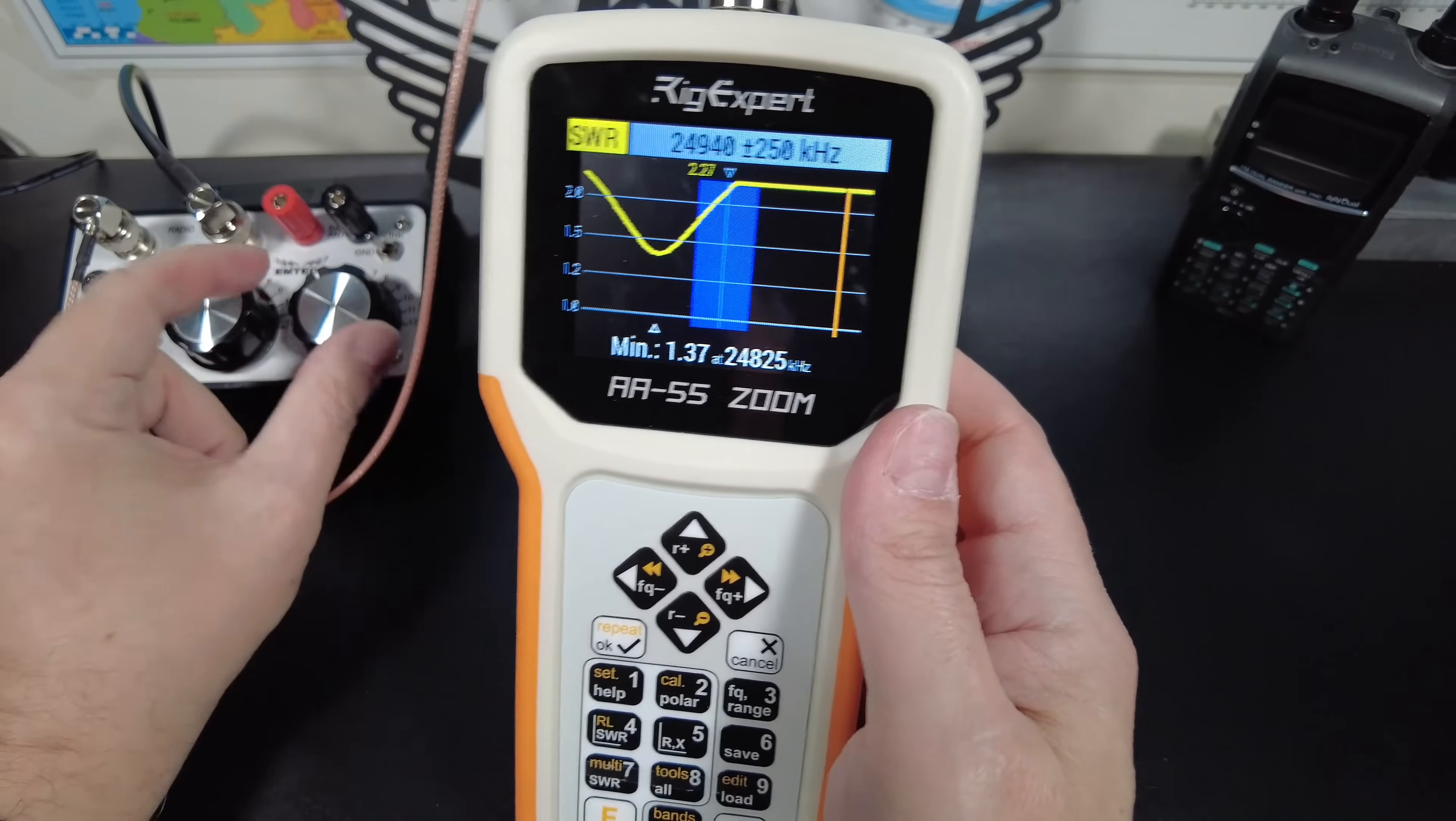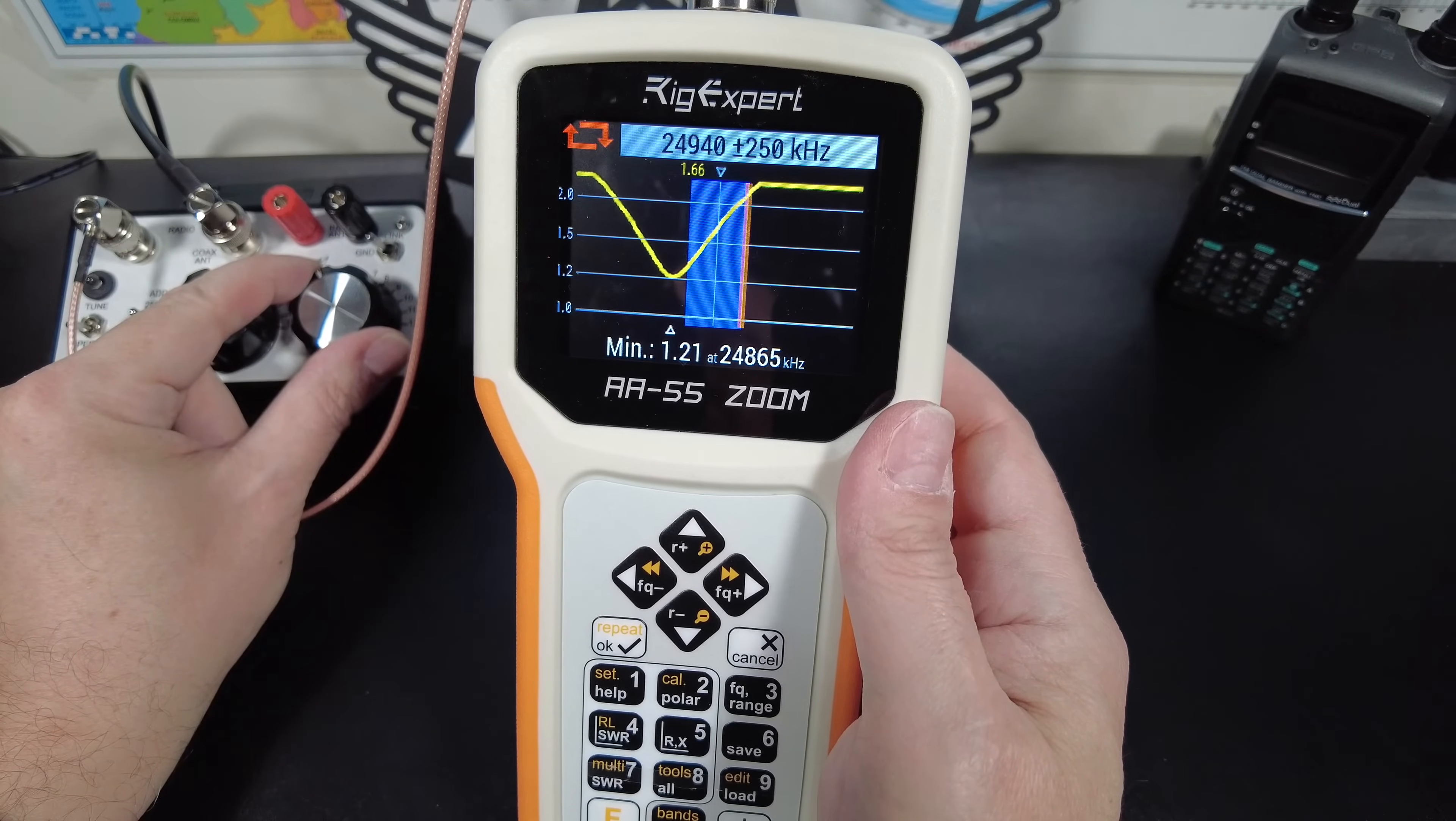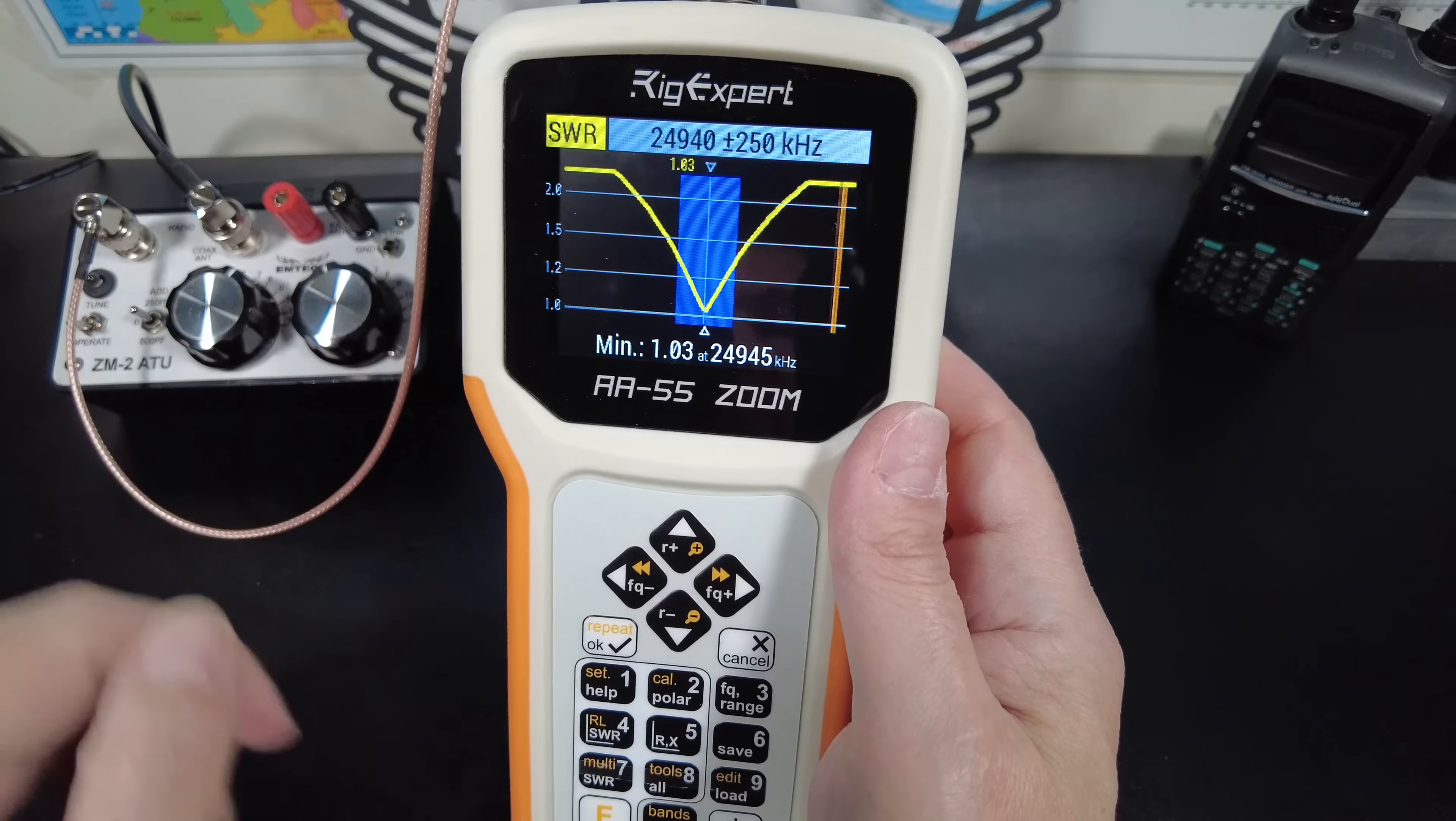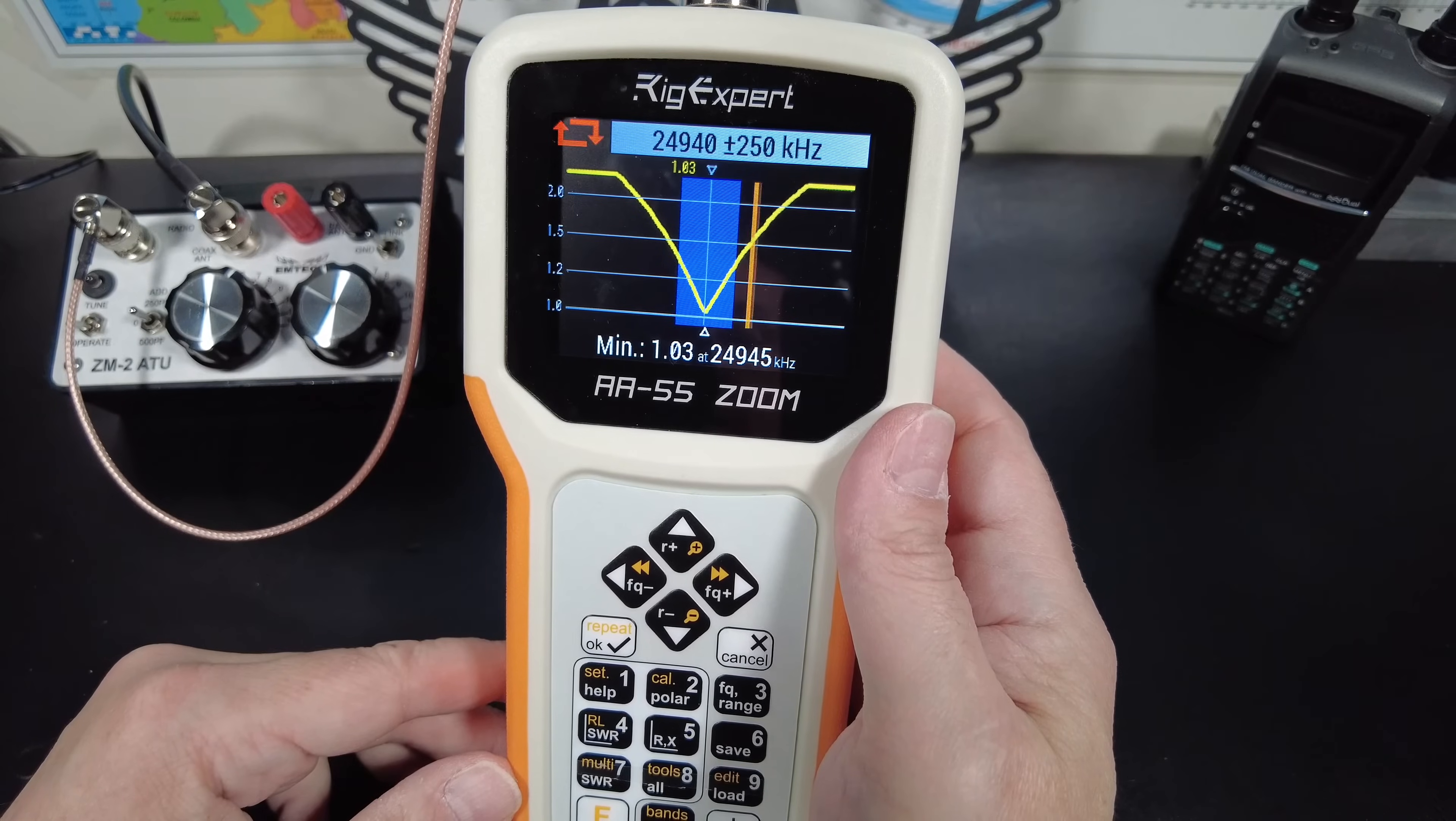Now I'm going to simulate trimming this by using the antenna tuner here. As you would trim a little off the antenna, you'll see that dip move just like it is now. And what you would do is trim a little bit off and trim a little bit more off until you get it to land exactly how you want it. And in this case, this would be pretty darn good. It's most resonant at 24,945, and the SWR is 1.03 to 1.